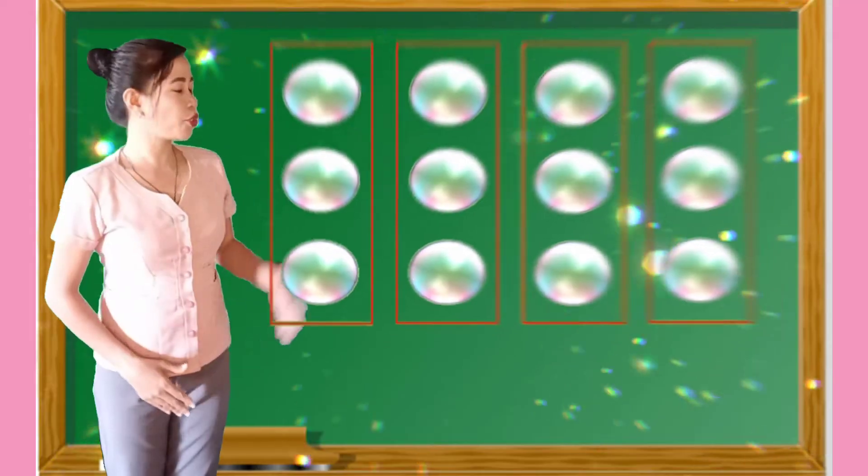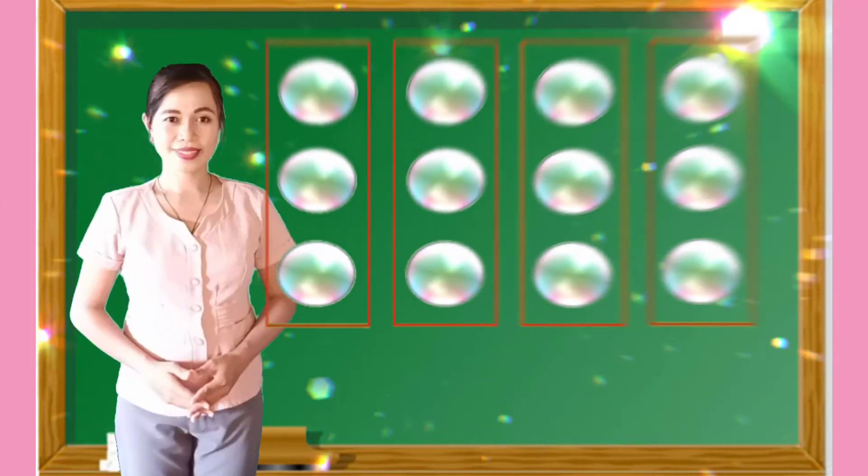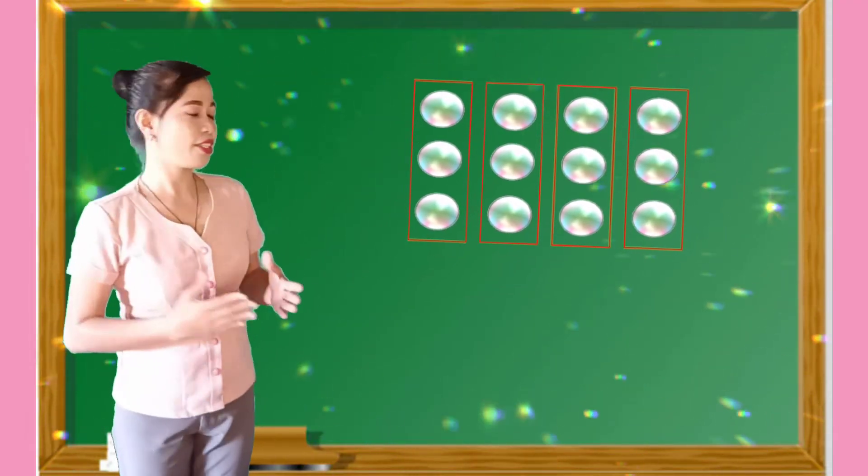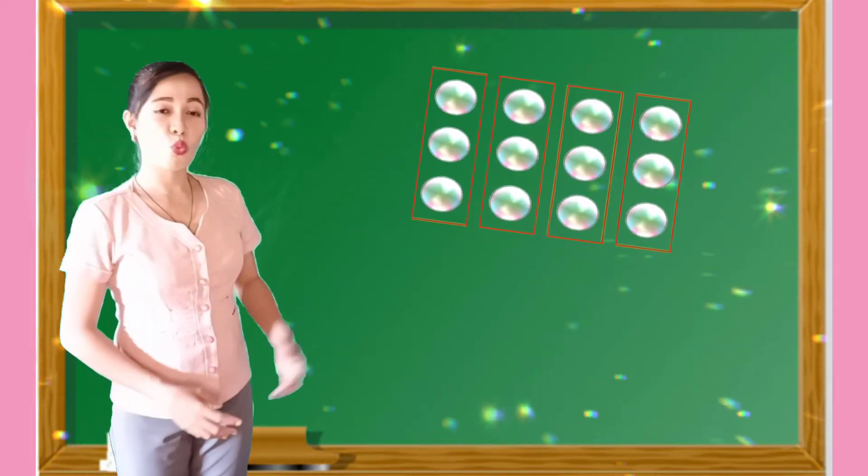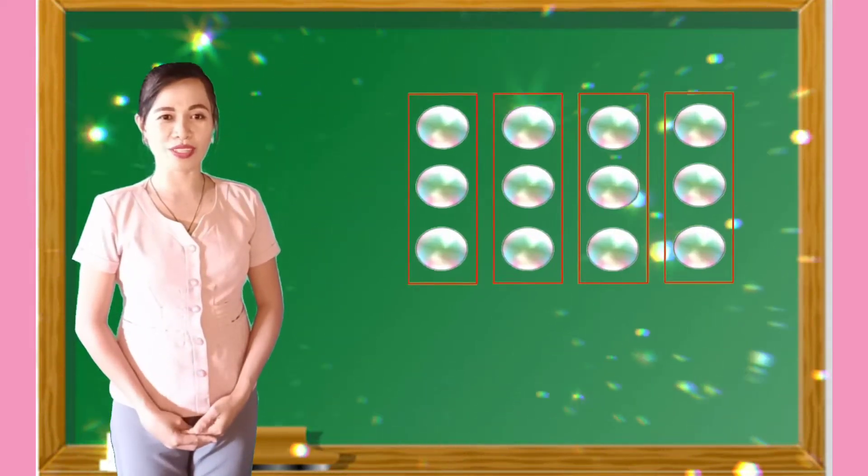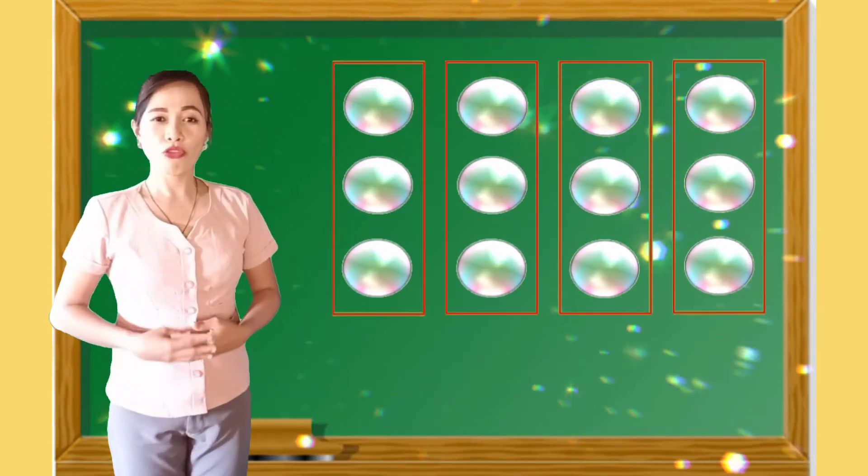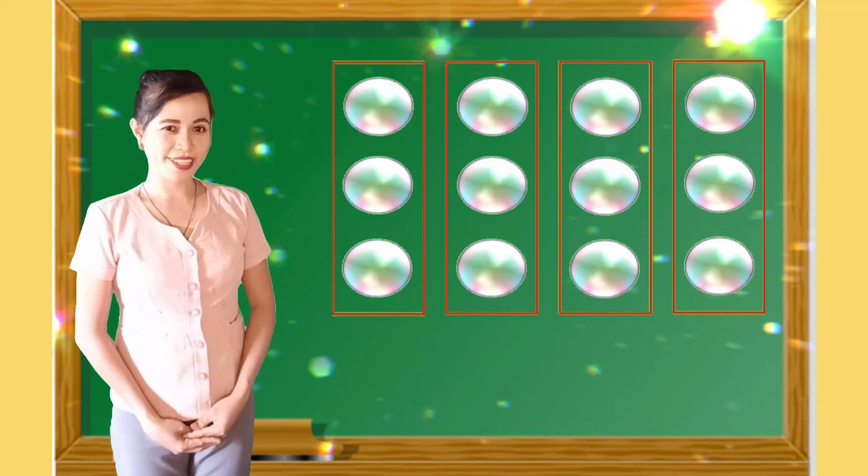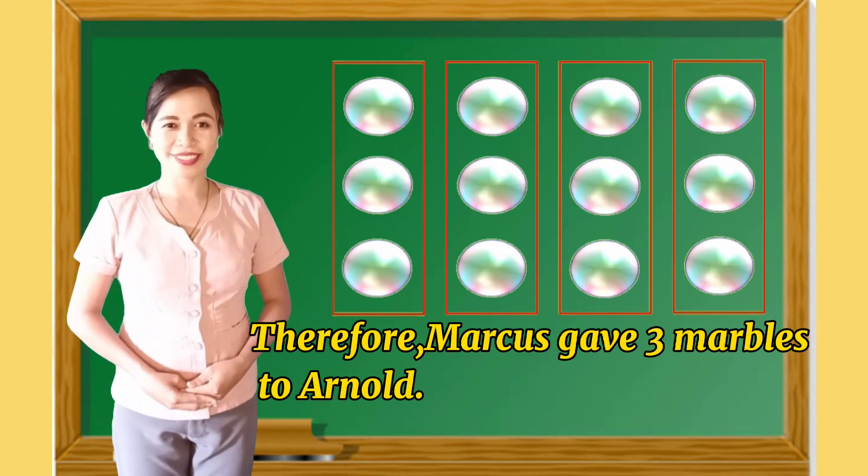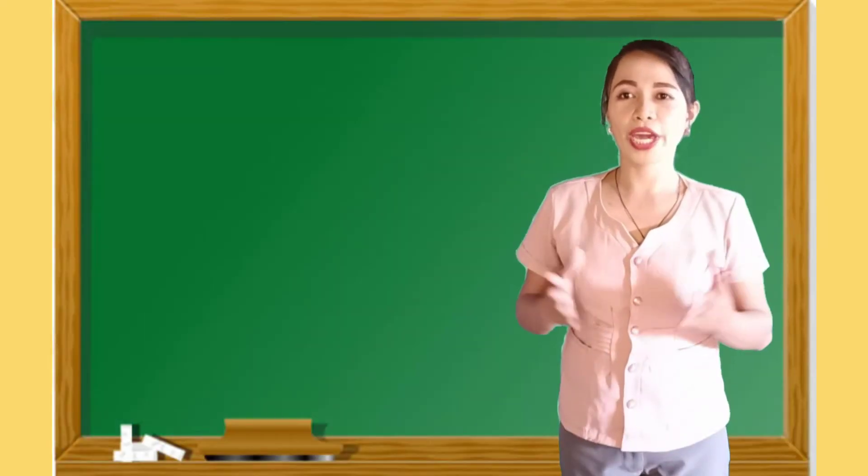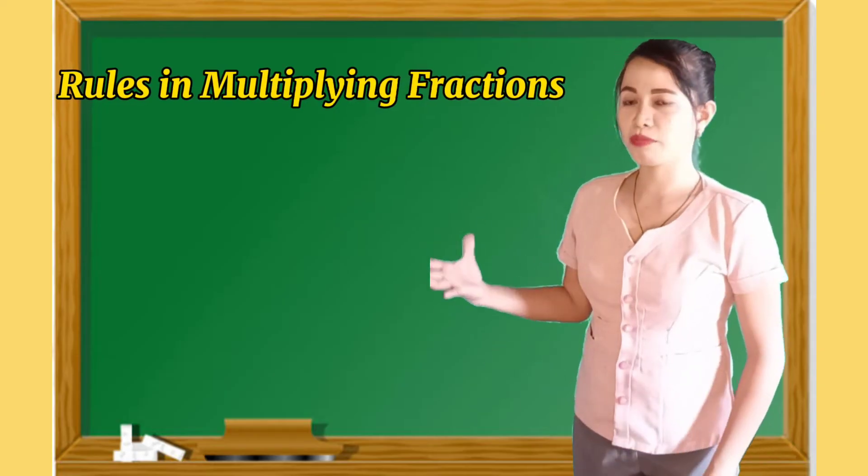To answer the problem, let us draw first a figure to represent the one-fourth of twelve marbles. Marcus divides his marbles into four. Each group represent one-fourth of his twelve marbles. Looking at the illustration, we can say that one-fourth of twelve is three. Therefore, Marcus gave three marbles to Arnold. Another way to solve the problem is through computation. There are rules in multiplying fractions.